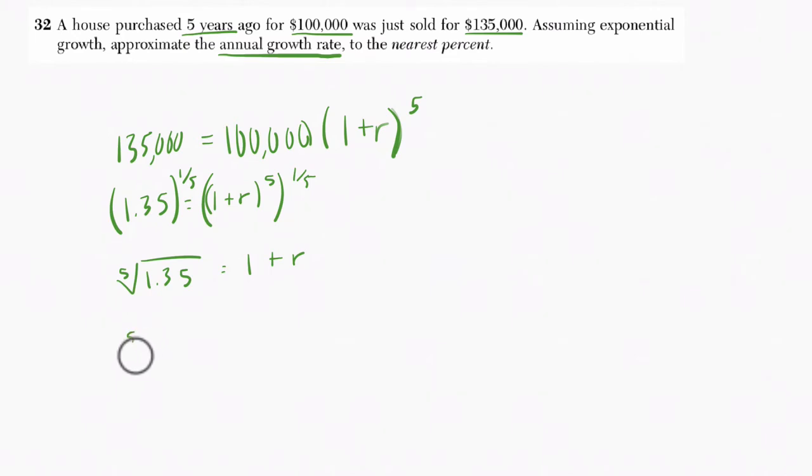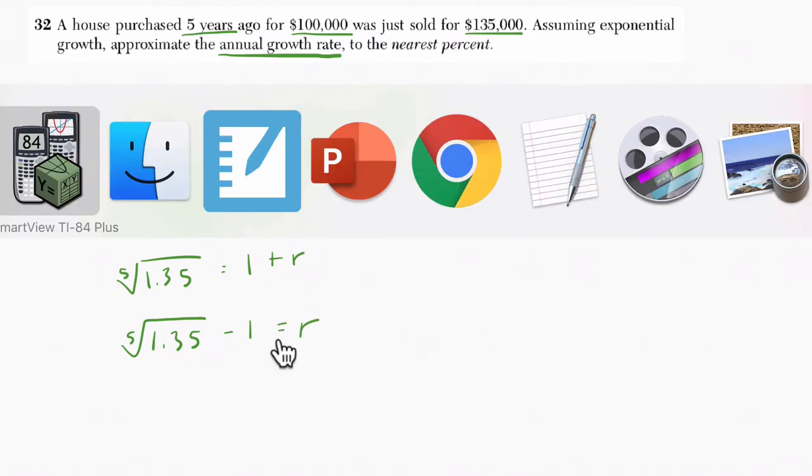Then we subtract 1 on both sides. We're dealing with the fifth root of 1.35, so some number multiplied 5 times gives you 1.35. We're subtracting 1 from that because we want to know what the growth rate is to the nearest percent. That's a calculator problem for me.